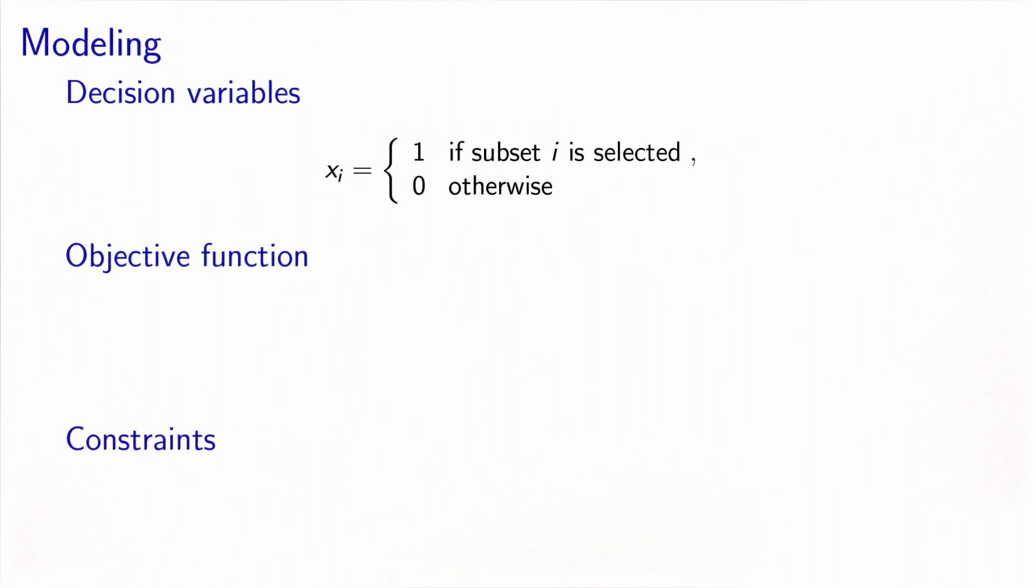The objective function consists in minimizing the total cost, which is the sum over all possible subsets, c_i x_i.